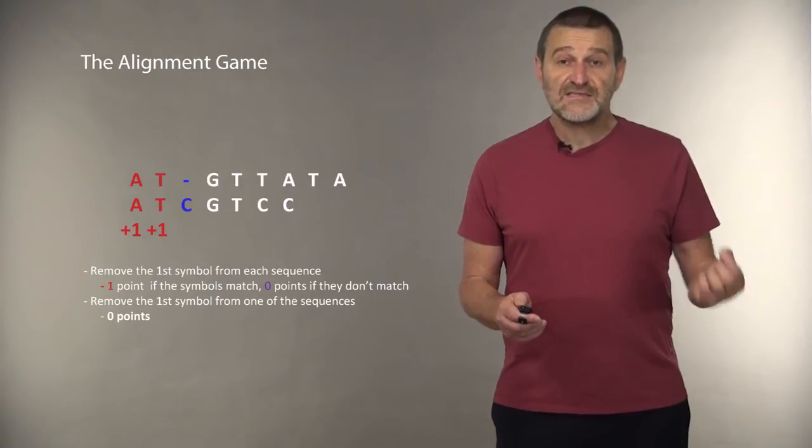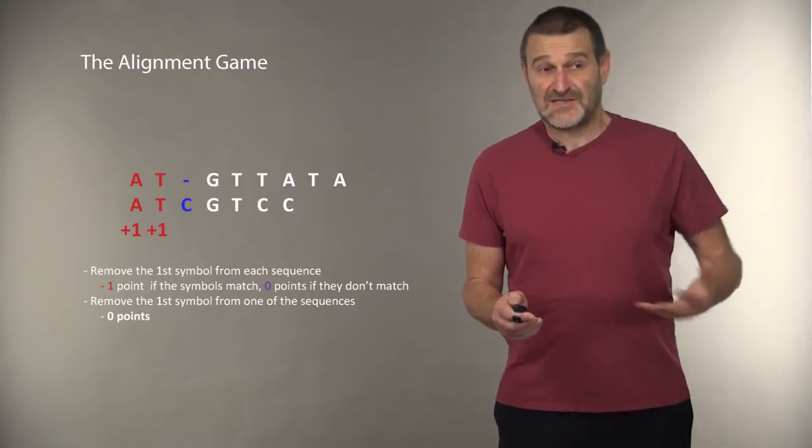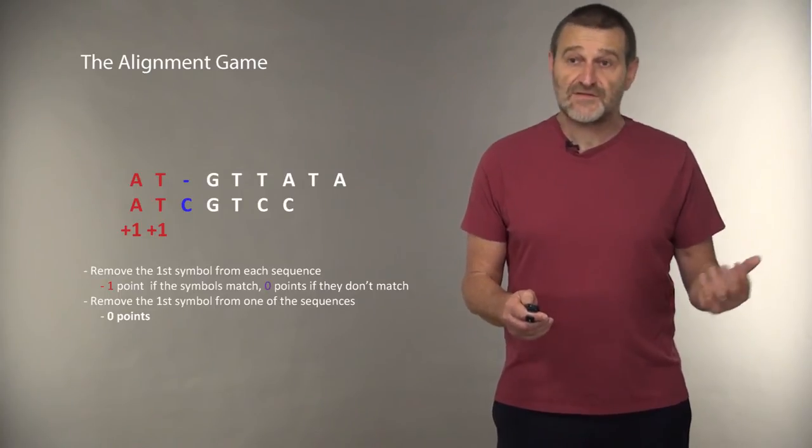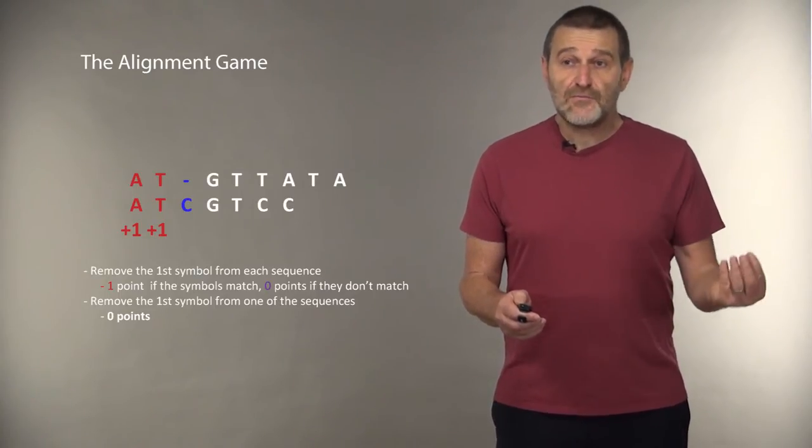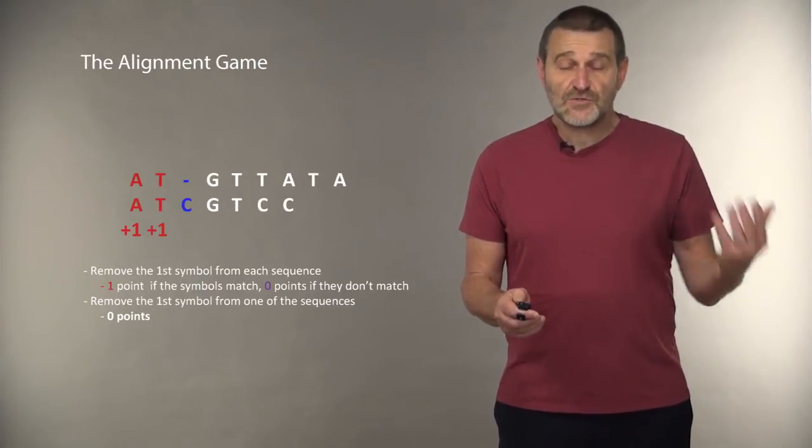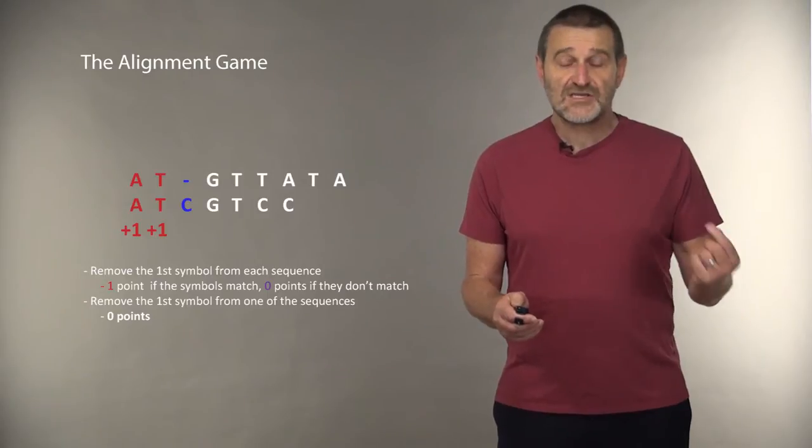Next, the sequences start from G and C. So we can either remove both, but we'll get no point, or we can remove one of them. That's what we do. And after we removed C from the second sequence, we actually have two sequences starting from G. That's good.